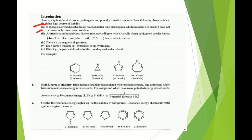In short, for a compound to follow Hückel's rule, it must have a cyclic structure, it should be planar, it should be a conjugated species, it should follow the 4n+2 pi electron rule, there should be a diamagnetic ring current, and each carbon must be sp2 or sp hybridized. It has high stability due to filled bonding molecular orbitals.